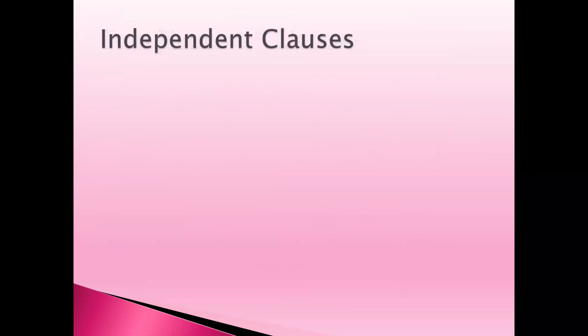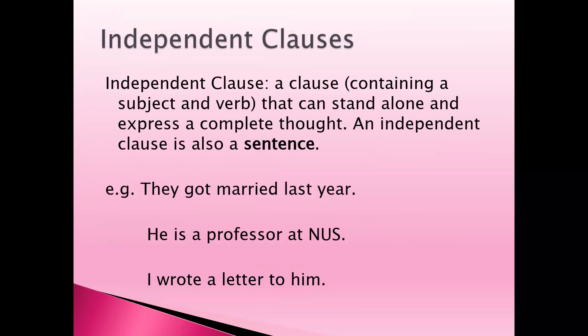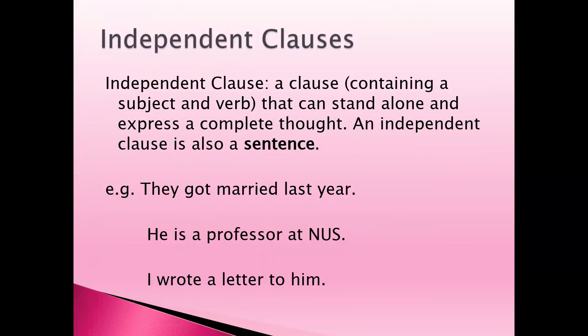An independent clause consists of a subject and a verb, and it can stand alone. It has already expressed a complete thought. So an independent clause can stand by itself as a complete sentence. Examples: 'They got married last year.' 'He is a professor at NUS.' 'I wrote a letter to him.'